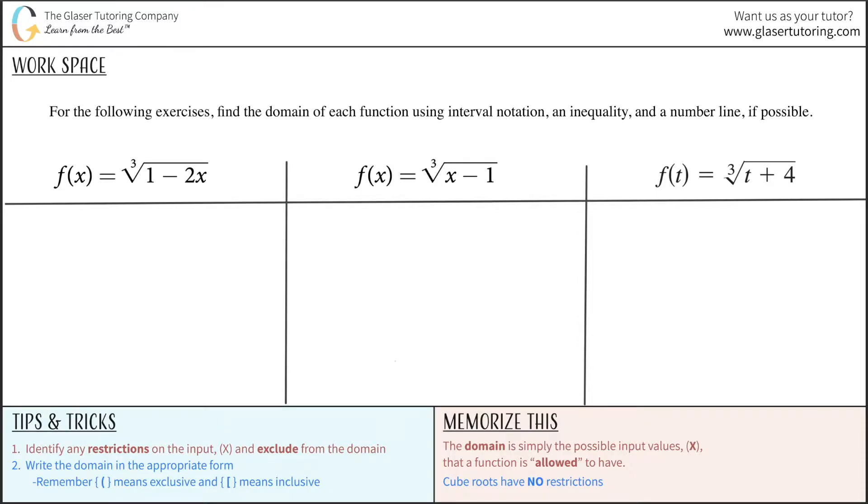For example, you can take the cube root of a positive or a negative value. If we were to look at the cube root of, let's say, 27, you're thinking to yourself, what number multiplied by itself three times would give me 27? That's the cube root.